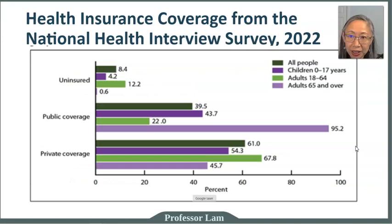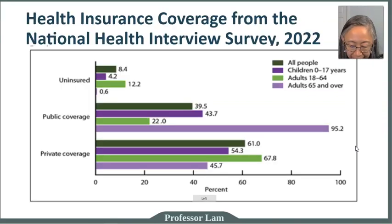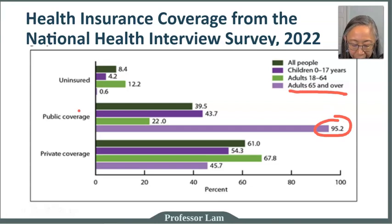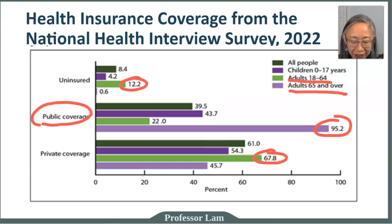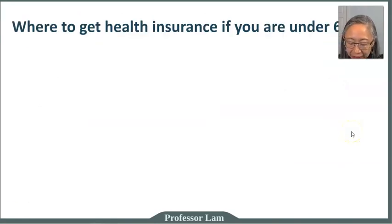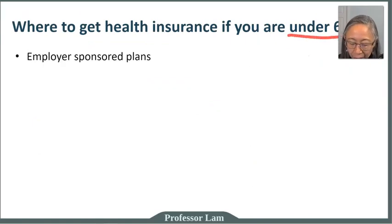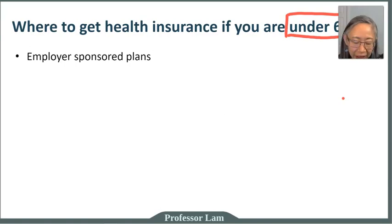As a result of the ACA, insurance coverage in America went up significantly. A 2022 survey shows that for older folks — people 65 and over — the majority are covered by public insurance, which is Medicare. For young adults below 65, most coverage is private insurance. Adults between ages 18 to 64 are the largest group that is uninsured. For individuals under 65 — the majority of working adults — their number one source of insurance coverage is the employer-sponsored plan.